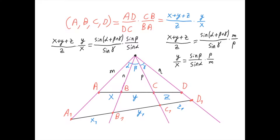And do you see now that the cross ratio of a, b, c, and d doesn't depend on the position of this black line in the plane? For example, if it was drawn here, then the cross ratio of the points a1, b1, c1, and d1 — which would equal x1 plus y1 plus z1 divided by z1 times y1 divided by x1 — would also equal sine of alpha plus beta plus gamma divided by sine of gamma times sine of beta divided by sine of alpha, which is the same as the cross ratio of the points a, b, c, and d. And therefore, the cross ratio doesn't change after a projection onto another line with respect to a point in the plane.